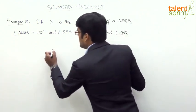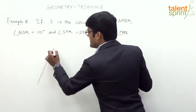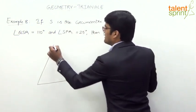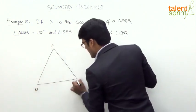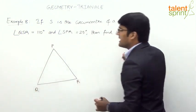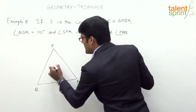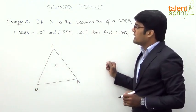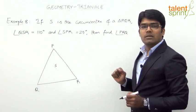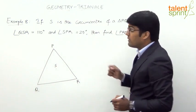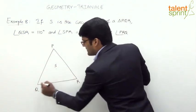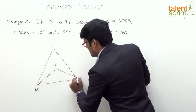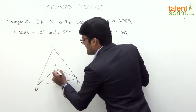Let us consider triangle PQR — vertices P, Q, and R — and S is the circumcenter. Angle QSR equals 110 degrees, so this angle here, QSR, is equal to 110 degrees.